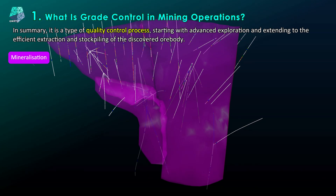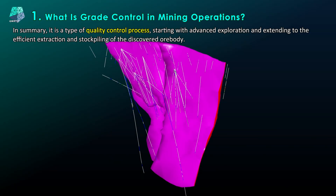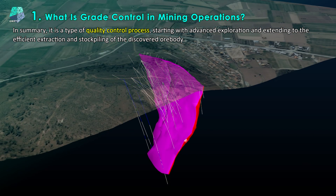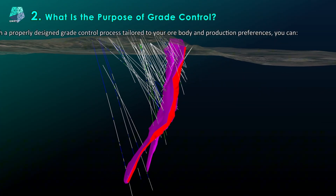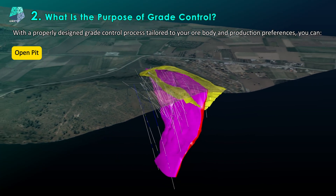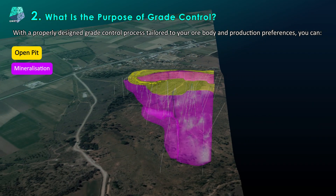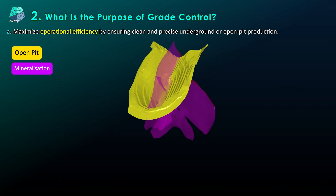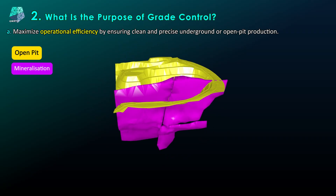In summary, grade control is a type of quality control process starting with advanced exploration and extending to the efficient extraction and stockpiling of the discovered ore body. With a properly designed grade control process tailored to your ore body and production preferences, you can maximize operational efficiency by ensuring clean and precise underground or open pit production.